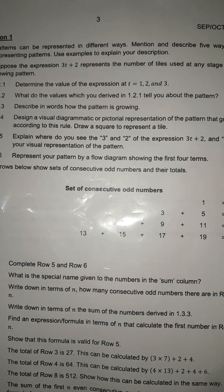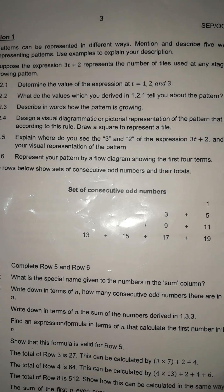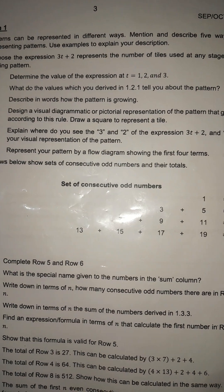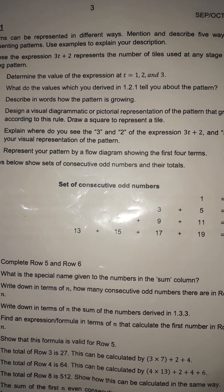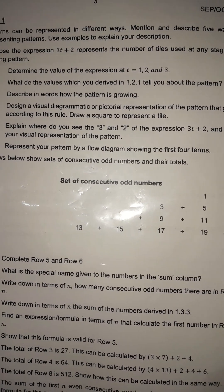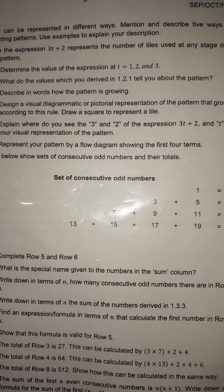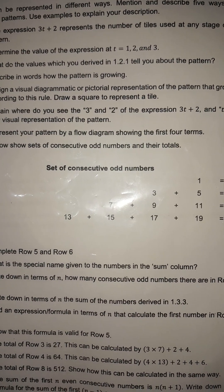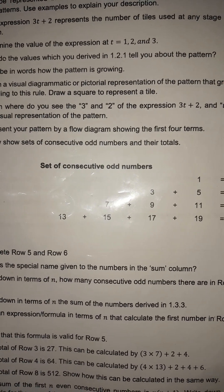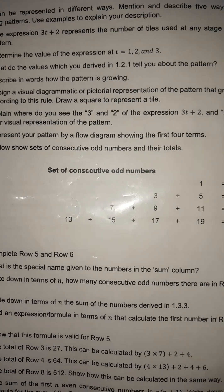When they say patterns can be represented in different ways, they mean it can be represented in a flow diagram, it can be represented in tables, it can be represented graphically, it can also be represented visually, or in a number line, which is the fifth one. Those are the five ways of representing patterns. Let's put it into practice.